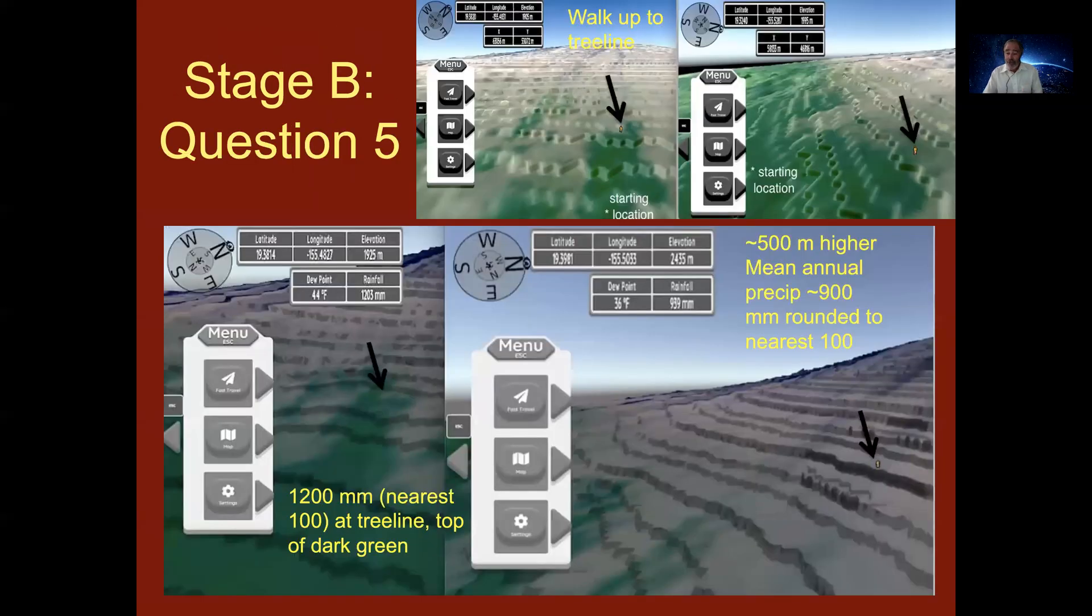The trick of this question and the problem that students encounter is not the precision, not identifying the wrong location for the tree line, but it's simply not reading the instructions. The instructions will plop you somewhere below the tree line and you need to walk up to the tree line.